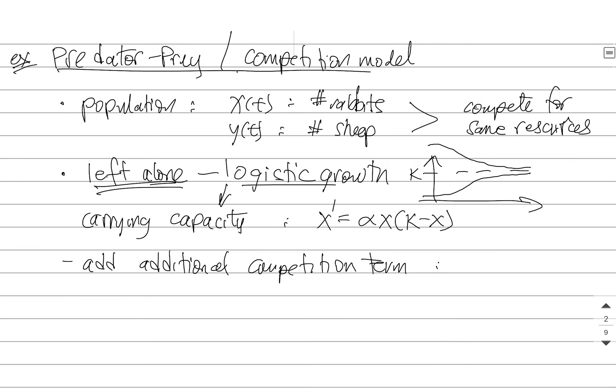So we could say something like this. The population of rabbits is going to follow a logistic pattern or logistic growth. Let me just simplify the model here. There's some sort of logistic growth pattern in this form. And there would be a competition term. And this competition term would depend on both the population of the rabbits and the sheep.